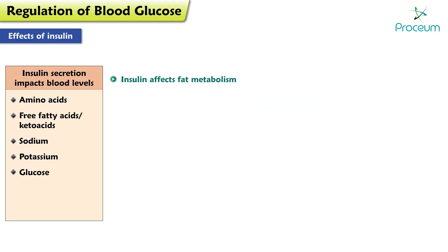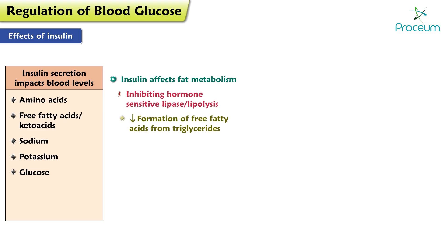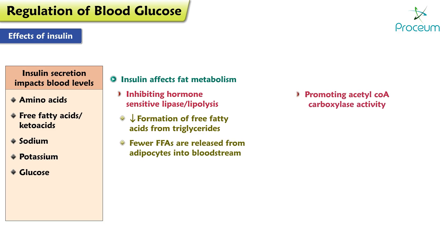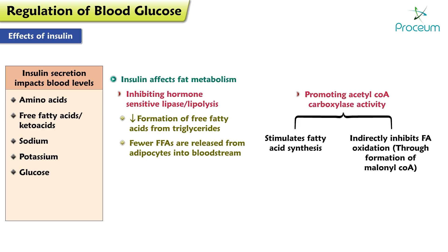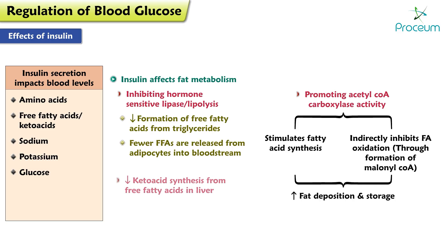Insulin affects fat metabolism in three ways. First, by inhibiting hormone-sensitive lipase or lipolysis, which decreases the formation of free fatty acids or FFAs from triglycerides or TGs — fewer FFAs are released from adipocytes into the bloodstream. Second, by promoting acetyl-CoA carboxylase activity, which stimulates fatty acid synthesis and indirectly inhibits fatty acid oxidation through the formation of malonyl-CoA, increasing fat deposition and storage. The last way is by decreasing ketoacid synthesis from free fatty acids in the liver.